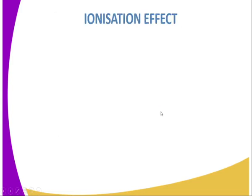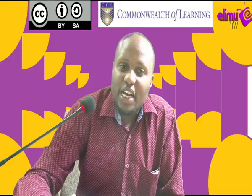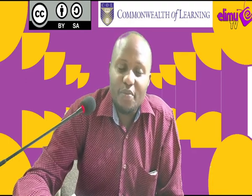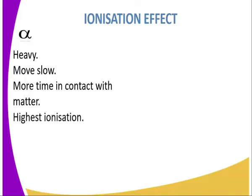Do they ionize matter, and if so, how? Starting with the alpha particle: it is heavy, with a mass number of four, so it moves slowly. As it penetrates through matter, it has more time in contact with matter, and this results in high ionization. Therefore, alpha particles have the highest ionization effect.